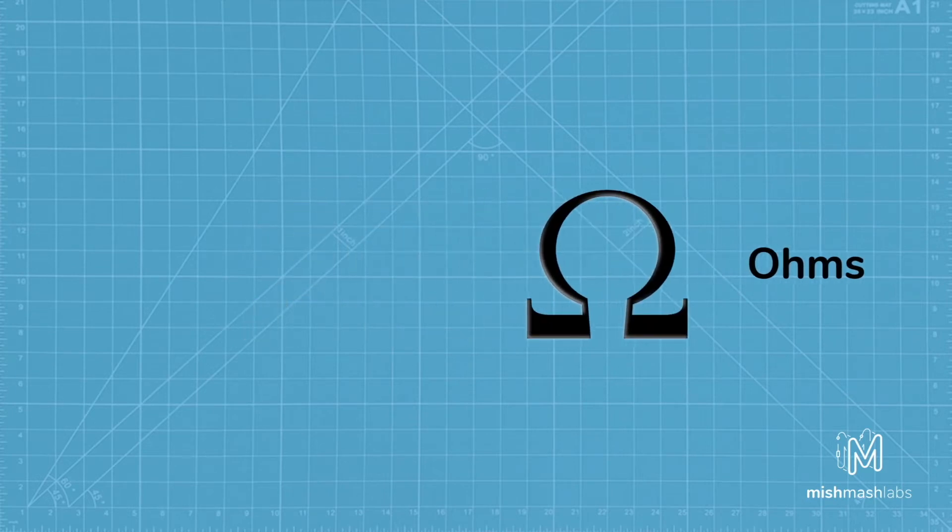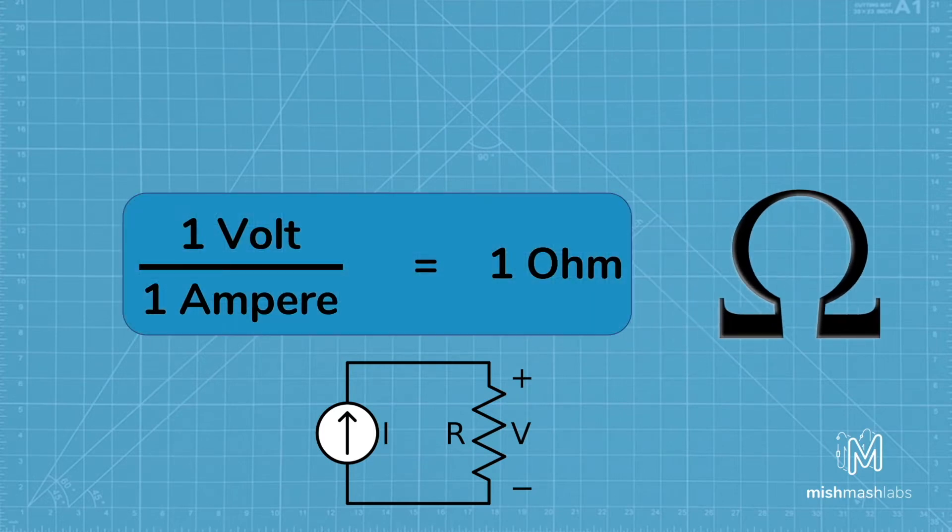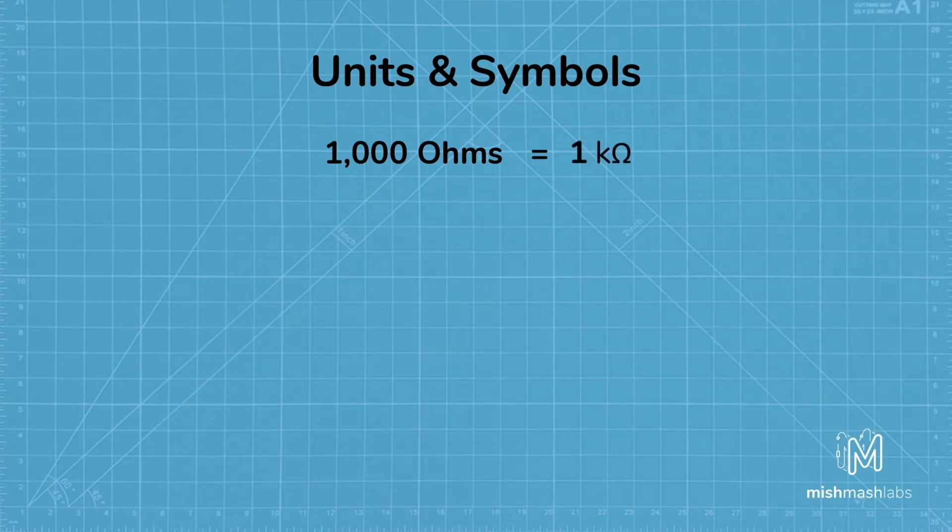The definition of one ohm is the resistance between two points where one volt of applied potential energy will push one ampere of current. To simplify things, we describe one thousand ohms as one kilo ohm, and describe one million ohms as one mega ohm with a capitalized M.